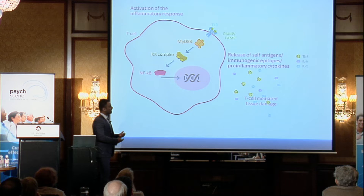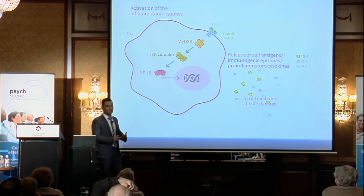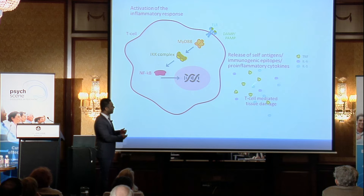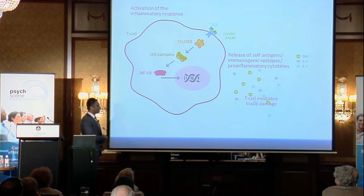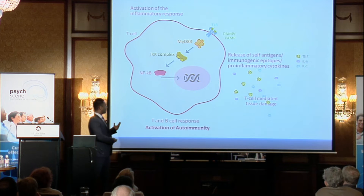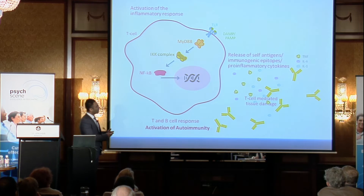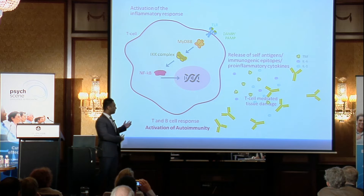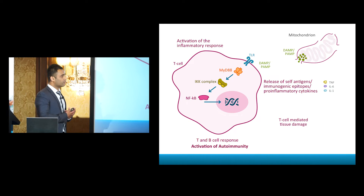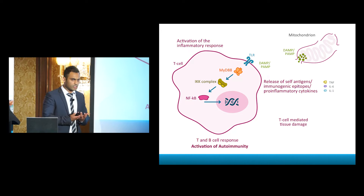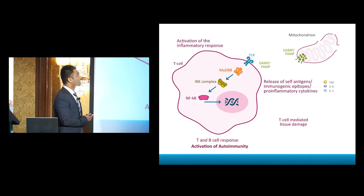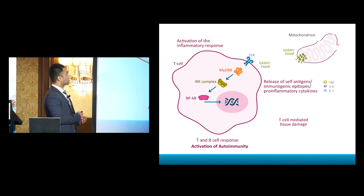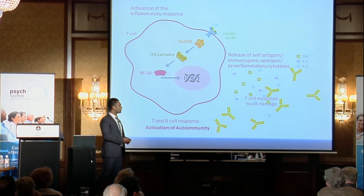When this inflammatory process is prolonged, it becomes a dangerous situation for the body. Once there is T-cell-mediated tissue damage, antigens are released that can then trigger off a T- and B-cell response, because these immunogenic epitopes are attacked by B-cell antibodies. This is the genesis of autoimmunity in a simplified way. NF-κB is the main transcription factor I've focused on here, though there are several others as well.